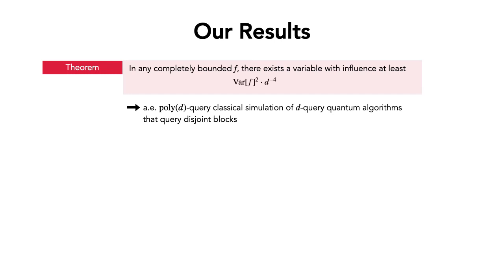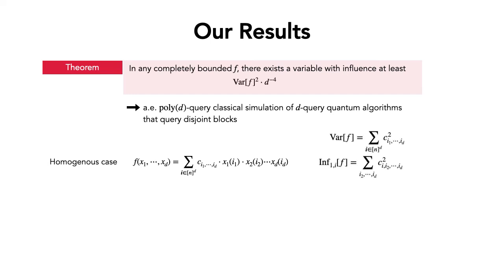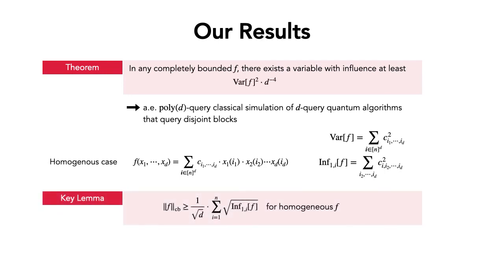To describe the proof, I'll focus on homogeneous polynomials of degree d, where you choose one variable from each of the d blocks. The variance is the sum of squares of all coefficients indexed by tuples in n^d. The influence of the i-th variable in the first block is the sum of squares of all coefficients with first index equal to i. The key lemma states that the completely bounded norm of any such polynomial is lower bounded by 1 over square root of d times the sum of square roots of influences of the first block.